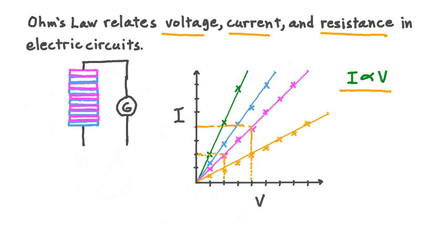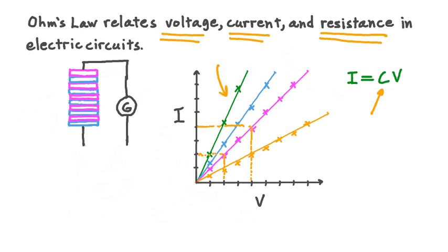We can take this relationship — I is directly proportional to V — and write it a different way. A mathematically equivalent way is to say that I is equal to some constant C multiplied by the voltage V, where C is called the constant of proportionality. Ohm saw that for each of the conductors he tested, so long as the line of best fit through the data points formed a line, that meant this constant of proportionality C was equal to 1 over the resistance of the conductor. That is, the slope of each of these lines for the individual conductors is equal to 1 over the resistance of the conductor.